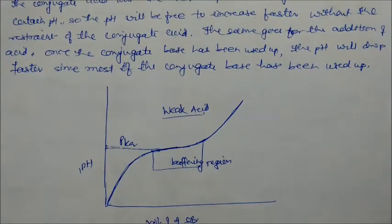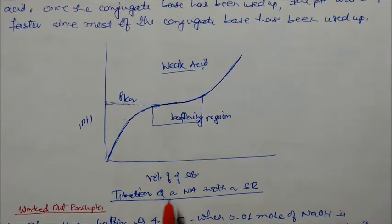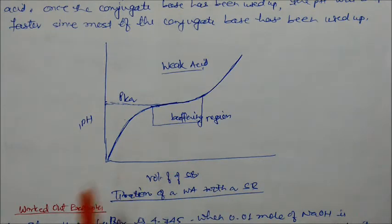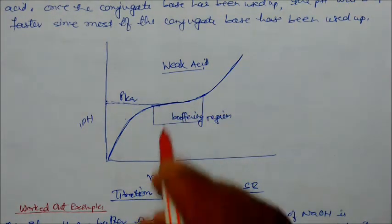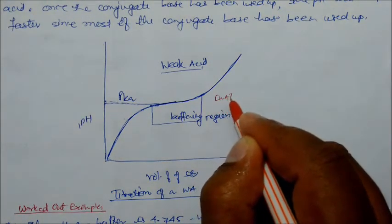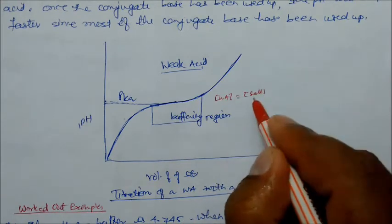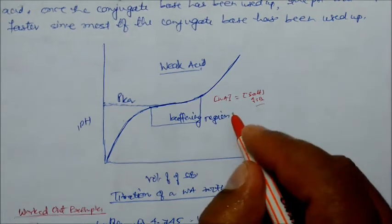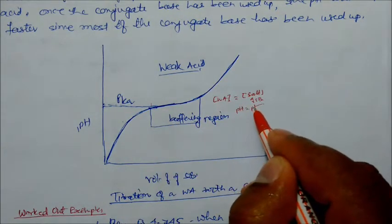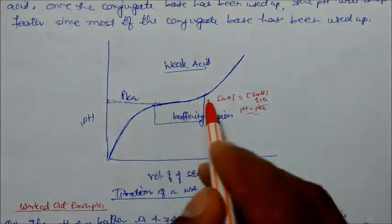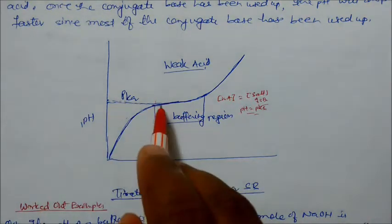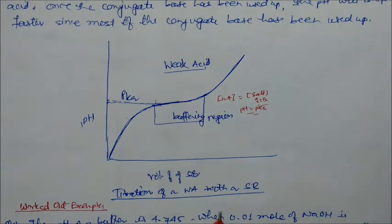A graph shows pH versus volume of strong base, treating weak acid with strong base. As strong base concentration slowly increases, at some point the concentration of salt and concentration of weak acid become equal — this is the buffer region where the pH equals pKa. This is the maximum buffer capacity point. Beyond this region, adding more strong base causes the pH to increase suddenly and rapidly.